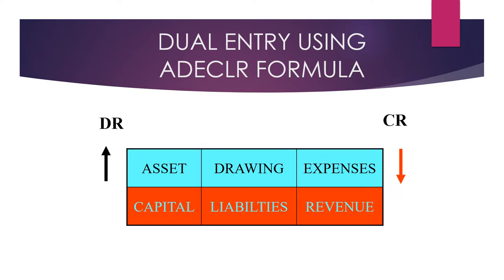For example, the money in the business bank account has been increased, and money is an asset — so asset increases. So cash at bank should be debited. For capital and revenue: whenever capital increases, the account should be credited. Same goes for liability and revenue.